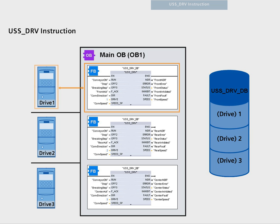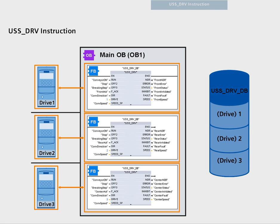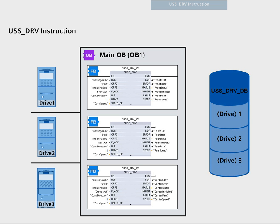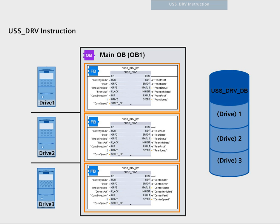The USS drive function block generates request messages to the corresponding drive and evaluates the response and status messages of the drive. For each drive, a separate function block must be used. All functions assigned to a communication module must use the same instance DB. Enter the data block name when you add the USS DRV function block for the first time; subsequently, you continue to use this DB, which was created when you added the first operation.